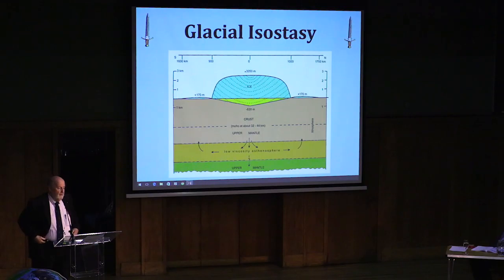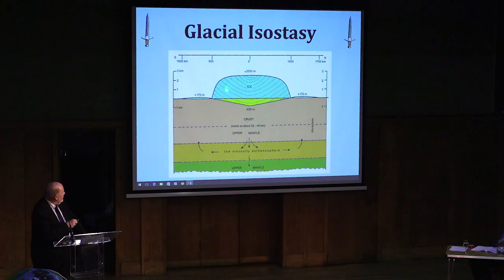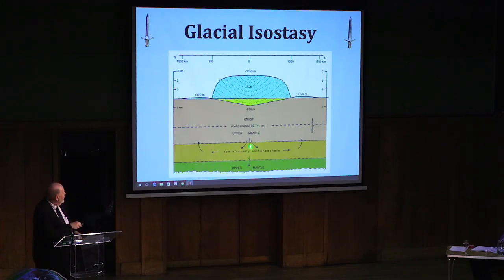This shows the tectonics involved in isostasy: you put a couple of kilometers' worth of ice on land — it depresses the land and bulges at the edges, depressing things down into the asthenosphere. When this ice melts, you get a rebound pop up.